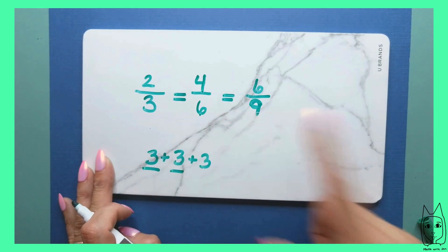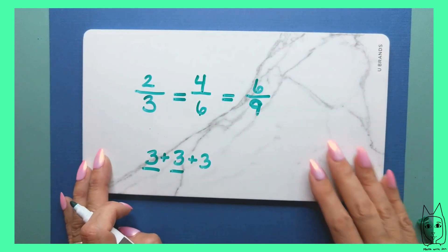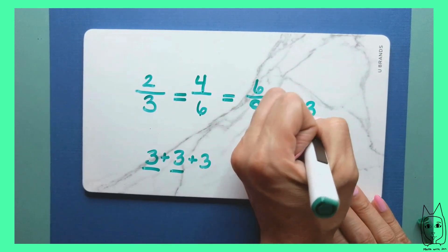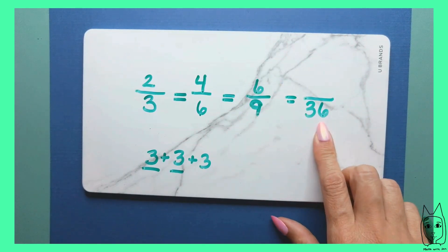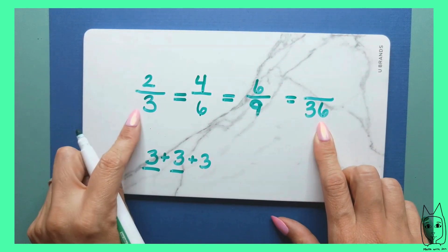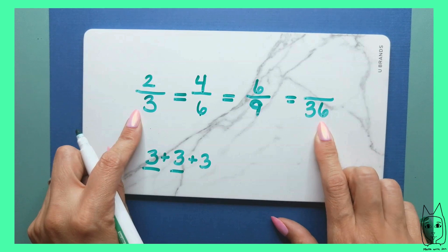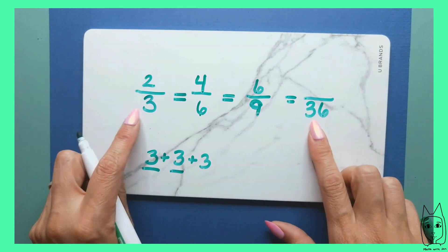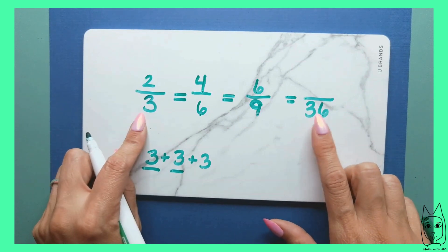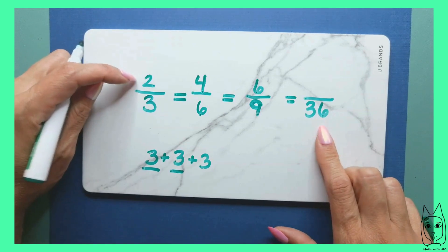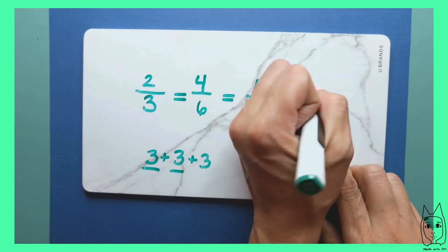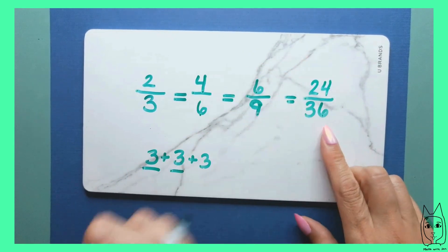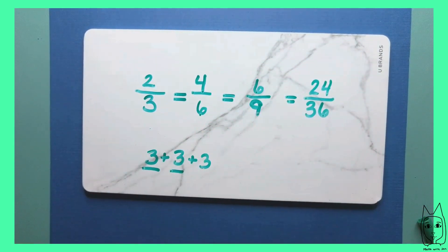You can just keep going. Now that you know your multiplication facts, I can ask you what the numerator would be for a denominator of 36. Each of these parts are broken into 12 equal parts, because three times 12 is 36. Each of these parts are now 12, so two times 12 is 24. All of these fractions are equivalent.